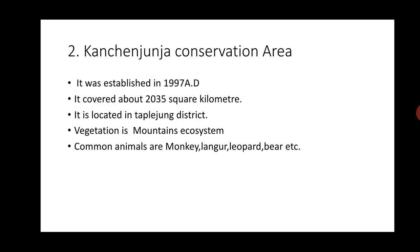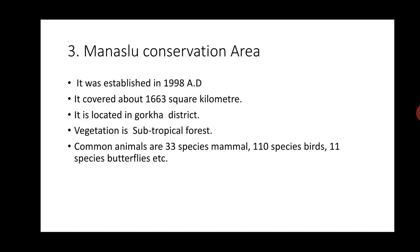Number two: Kanchenjunga Conservation Area. It was established in 1997 AD. It covers about 2,035 square kilometers. It is located in Taplejung district. Vegetation is mountain ecosystem. Common animals are monkey, snow leopard, bear, etc.